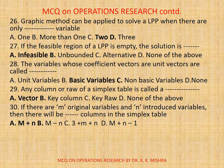Question 29. Any column or row of a simplex table is called a Dash. A, Vector. B, Key Column. C, Key Row. D, None. The correct option is A, Vector.